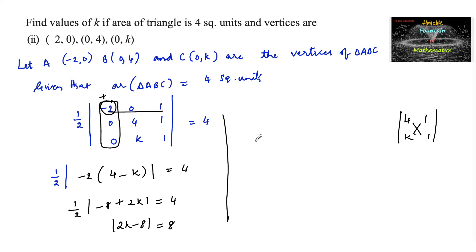Removing the modulus, we can write 2k minus 8 is equal to plus or minus 8, since we know that mod x equals a implies x equals plus or minus a.